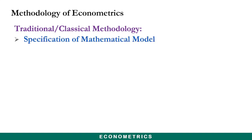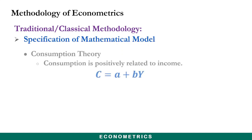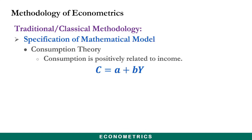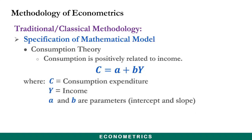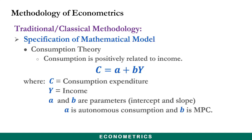After identifying a theory, you move on to the next step: specification of the mathematical model. Taking the consumption theory — that consumption is positively related to income — we formulate the mathematical model as C = A + BY, where C is consumption expenditure, Y is income, and A and B are parameters representing the intercept and slope respectively. A is known as autonomous consumption, and B is the marginal propensity to consume (MPC).